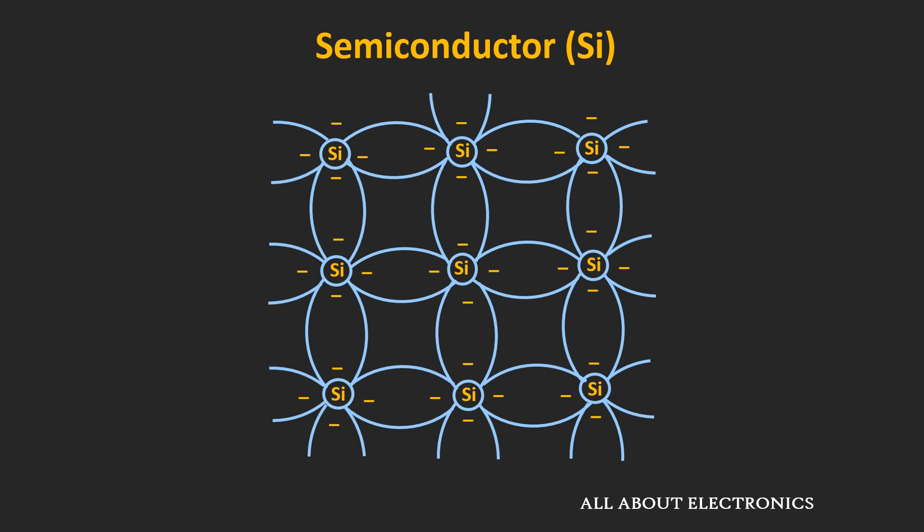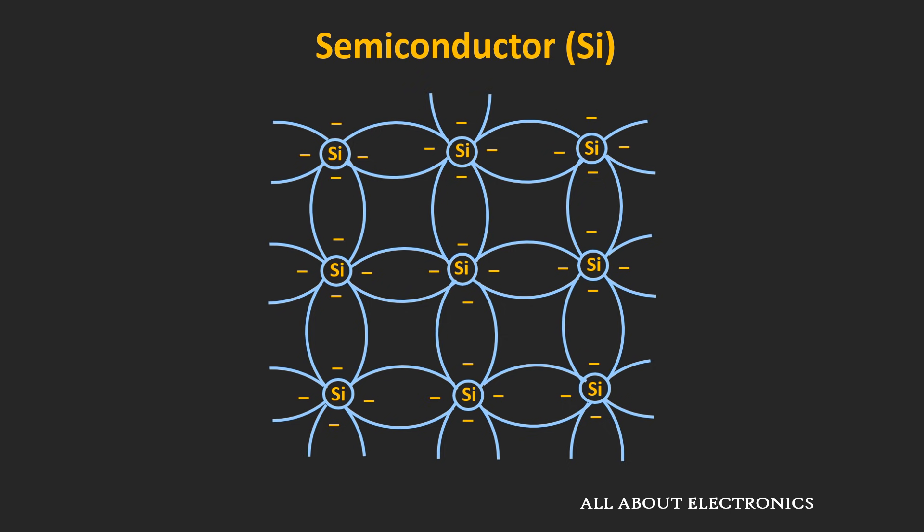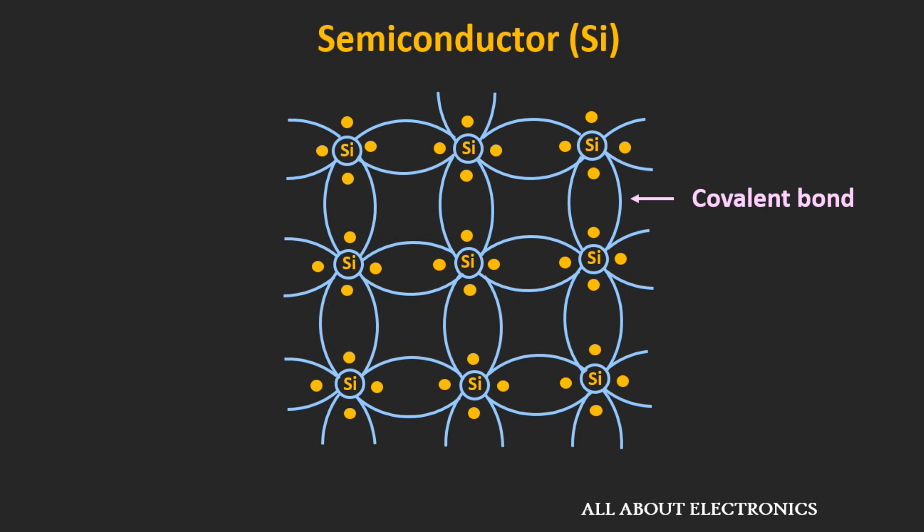Whenever silicon atoms combine to form a solid, they arrange themselves in a particular pattern known as a crystal. In this crystal structure, each silicon atom shares its four electrons with neighboring atoms in such a way that each silicon atom ends up with eight valence electrons. In this way, by sharing electrons, the silicon atoms form covalent bonds.